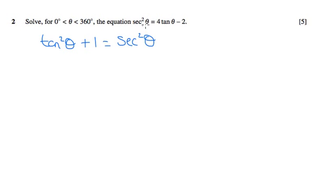So where we see a sec squared theta, we can change it to tan squared plus 1. So, tan squared theta plus 1 equals 4 tan theta take away 2.